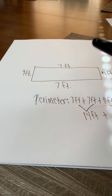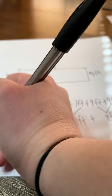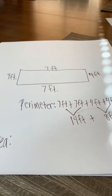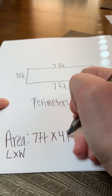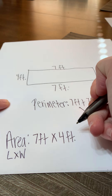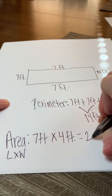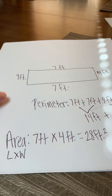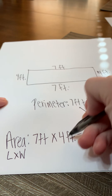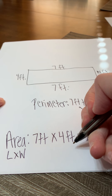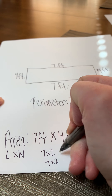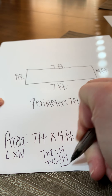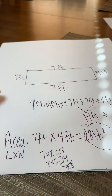Let's go ahead and do area. For my area, I'm going to take my length times my width. My length is seven feet times my width of four feet. This gives me a total of 28 feet squared. If you're not sure of your facts for seven times four, you can always skip count, or take seven times two plus seven times two: 14 plus 14 gives me 28. So 28 feet squared is your answer for area.